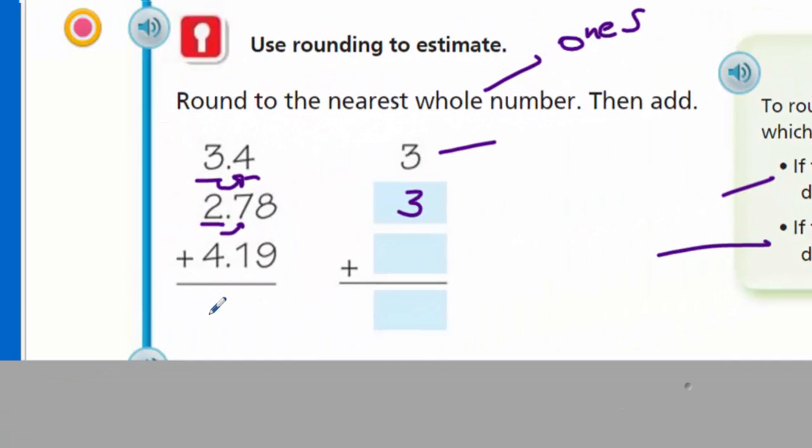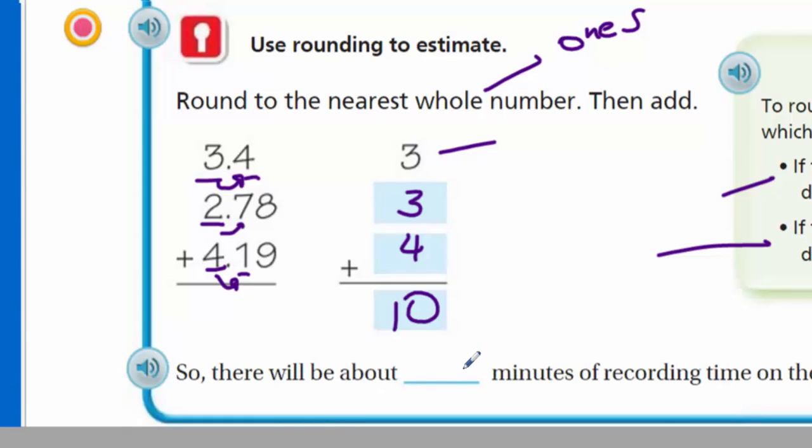What does it say here? If the digit to the right is less than five, the digit in the rounding place stays the same. If the digit to the right is five or greater, the digit in the rounding place increases by one. That's a true statement. Next, we have 4.19. The one is letting us know that it's four or less, so we're going to let the four rest. We add them together: 4 plus 3 plus 3 equals 10. So there will be about 10 minutes of recording time on the CD. That 'about' lets you know we're estimating.